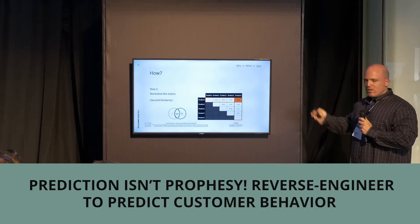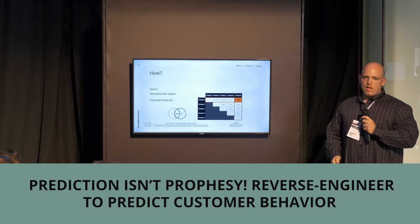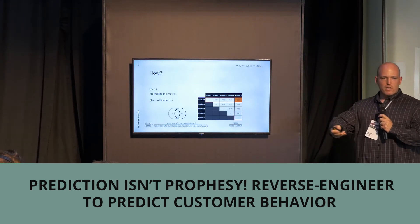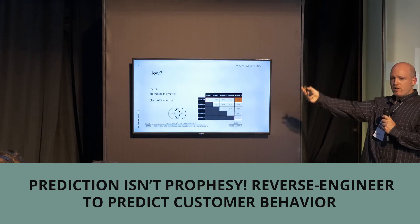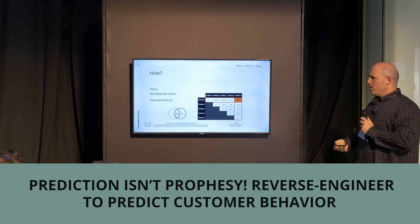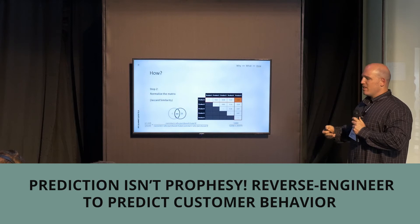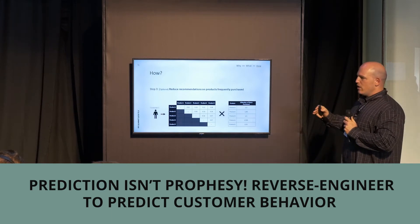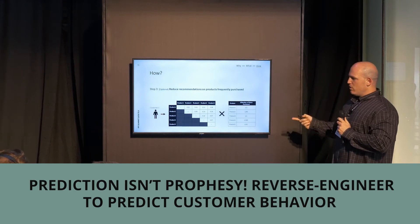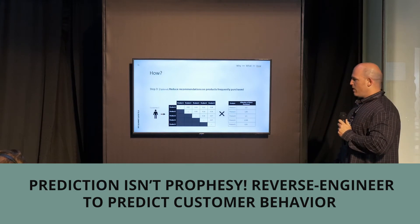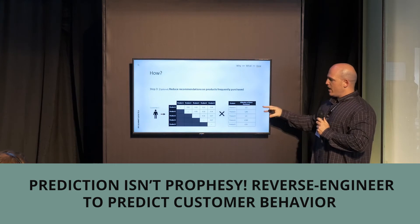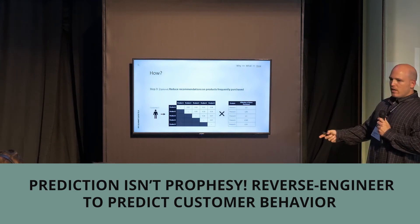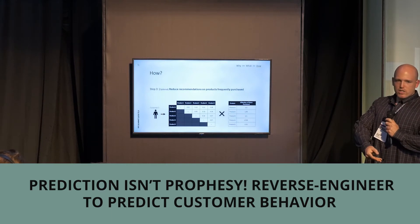Why do we normalize? We need to treat cases where a company is heavily promoting a specific product, or where a product is already displayed on the homepage and is therefore already the most popular. Without normalization, these cases can skew the model's results. Step three, which is optional: we do a deep dive to the customer level. We reduce recommendations on products based on each customer's purchase frequency. Essentially, the more a customer has already purchased a specific product, the less likely we are to recommend it to them — which makes sense.